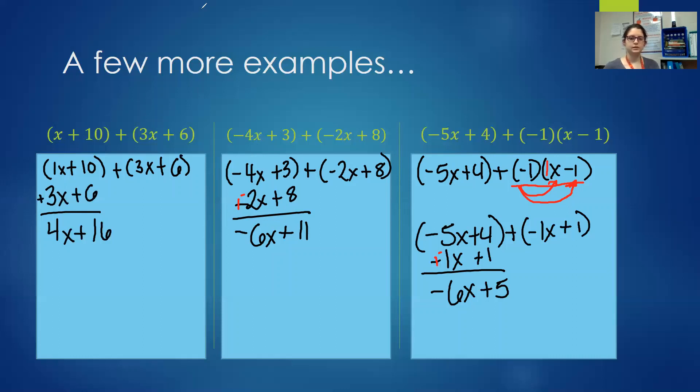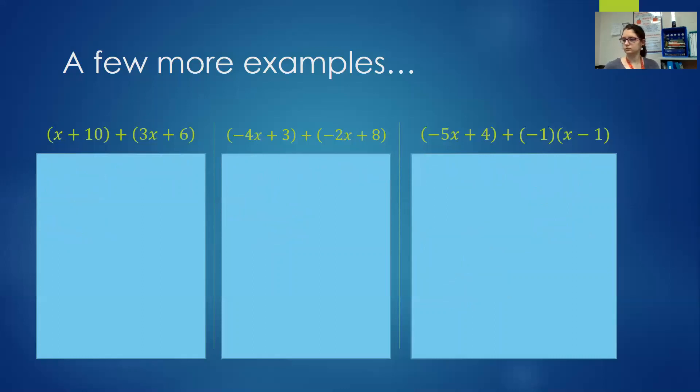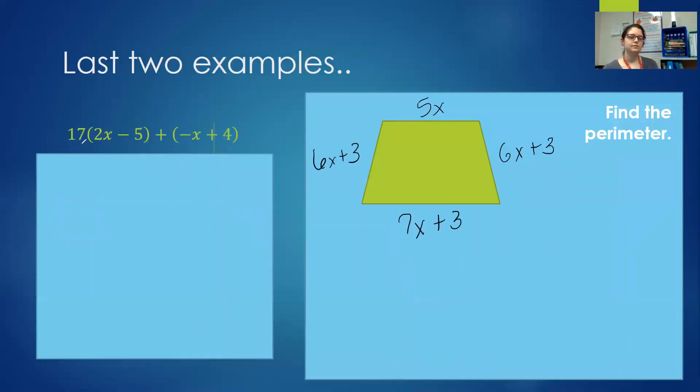Let's look at two more examples. We have 17 times 2x minus 5 plus negative x plus 4. We want to distribute our 17 first to the 2x and to the negative 5. And I'm also going to drop in a 1 between my negative and my x to show that it is a negative 1x. So 17 times 2 is 34x, minus 17 times 5 is 85. Drop in my parentheses. Plus negative 1x plus 4.